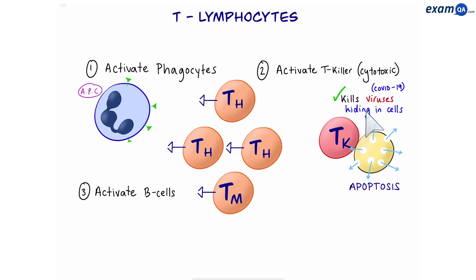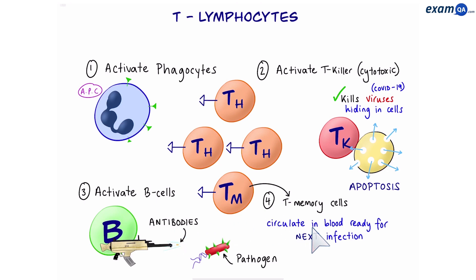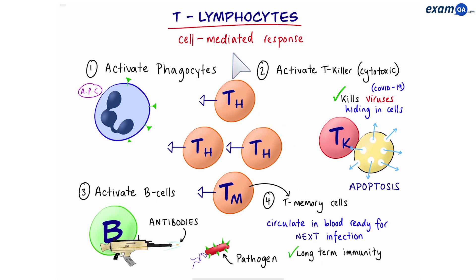T helper cells also activate B cells. B cells are important because they produce antibodies to kill pathogens — we'll talk about this in more detail in the next video. Finally, some T memory cells are produced. These circulate in the blood for a long time, ready for the next infection, providing long-term immunity. The T lymphocyte's response is also known as a cell-mediated response.